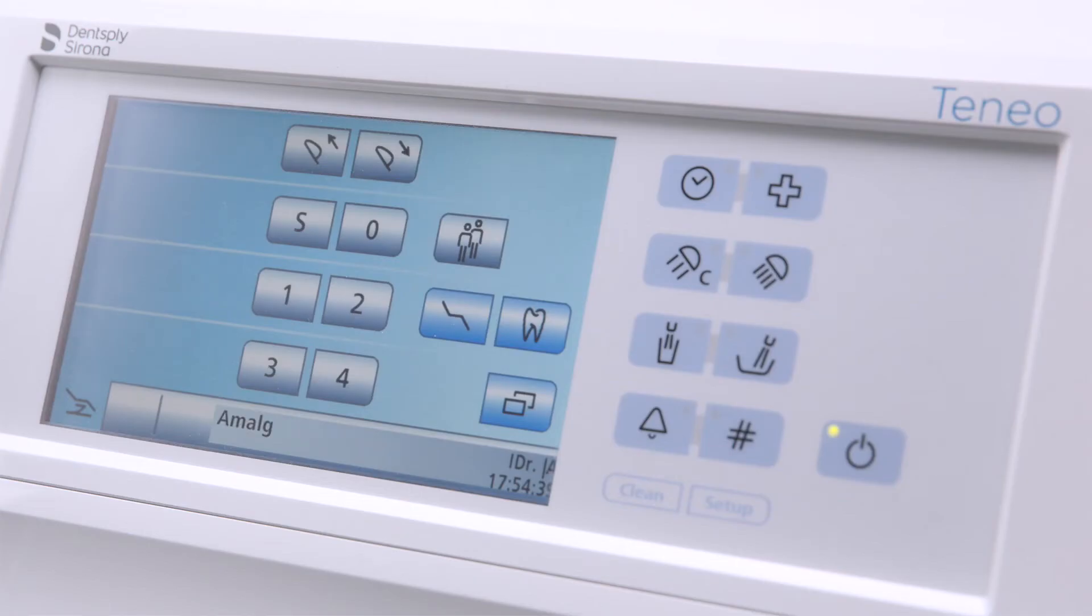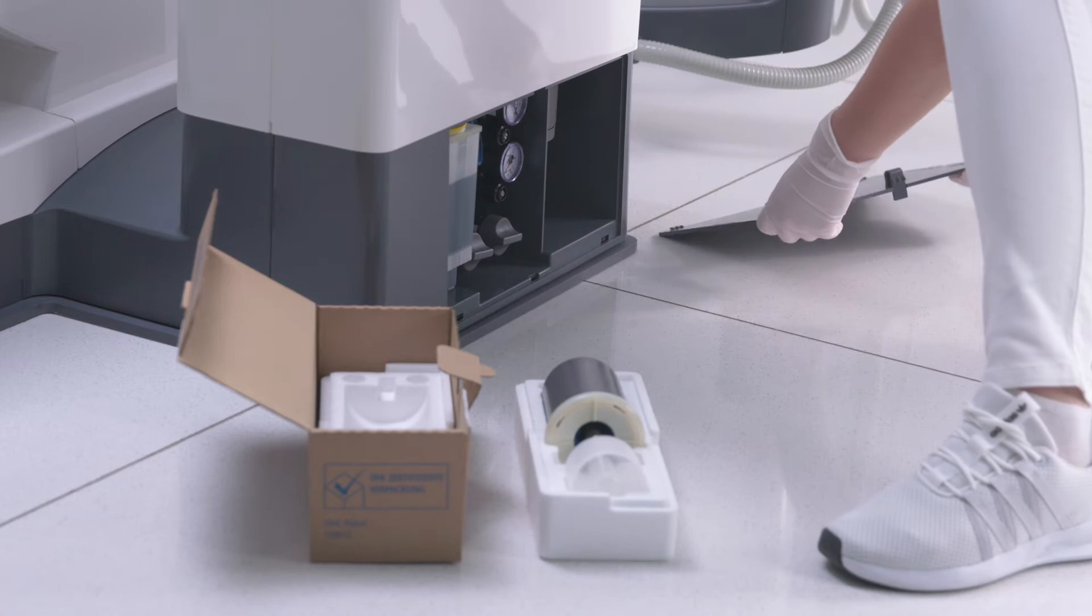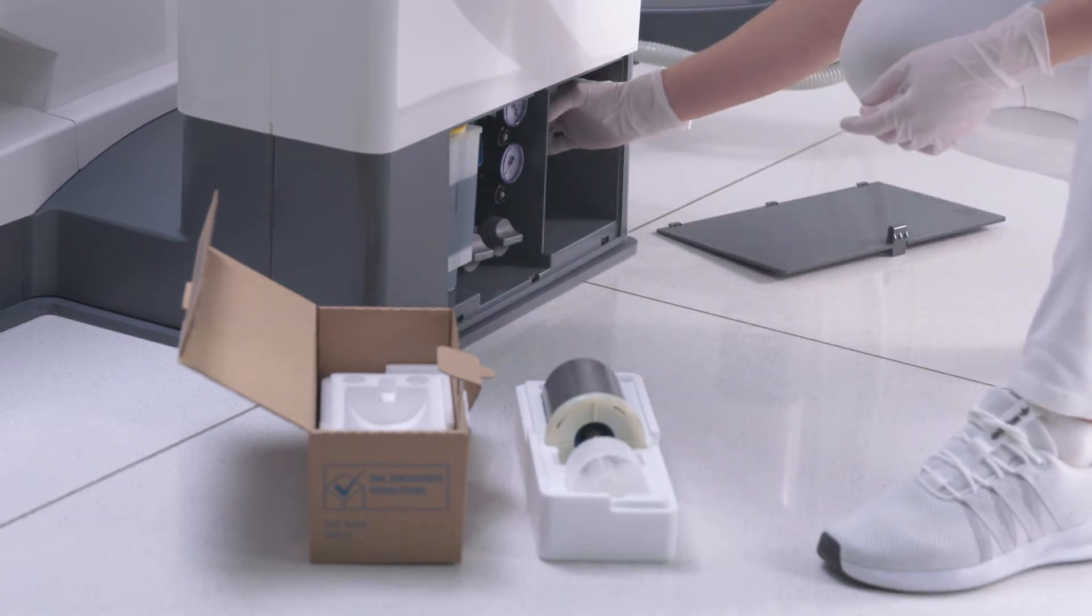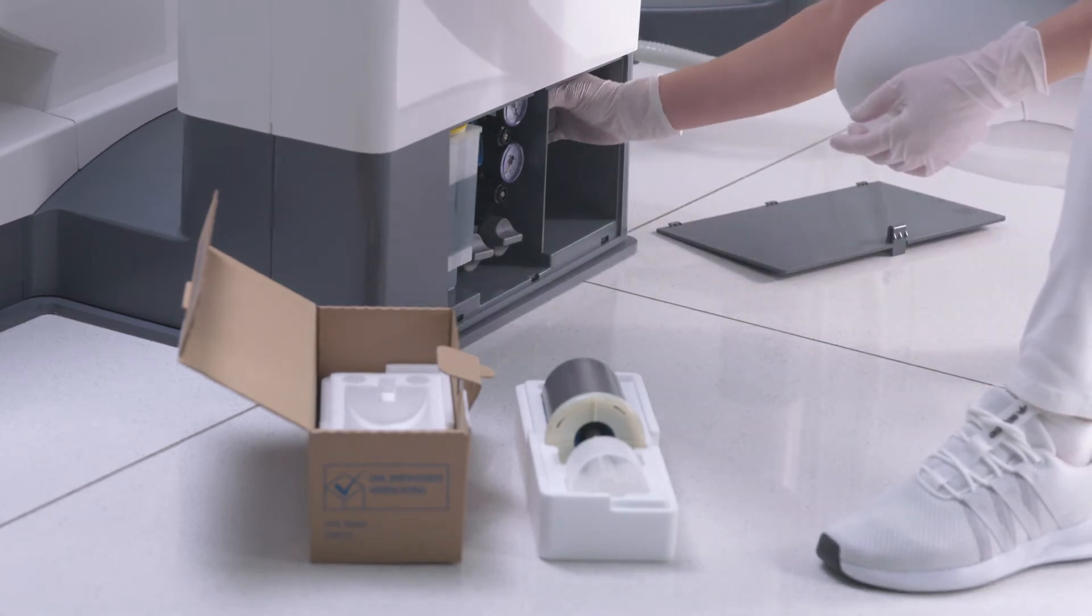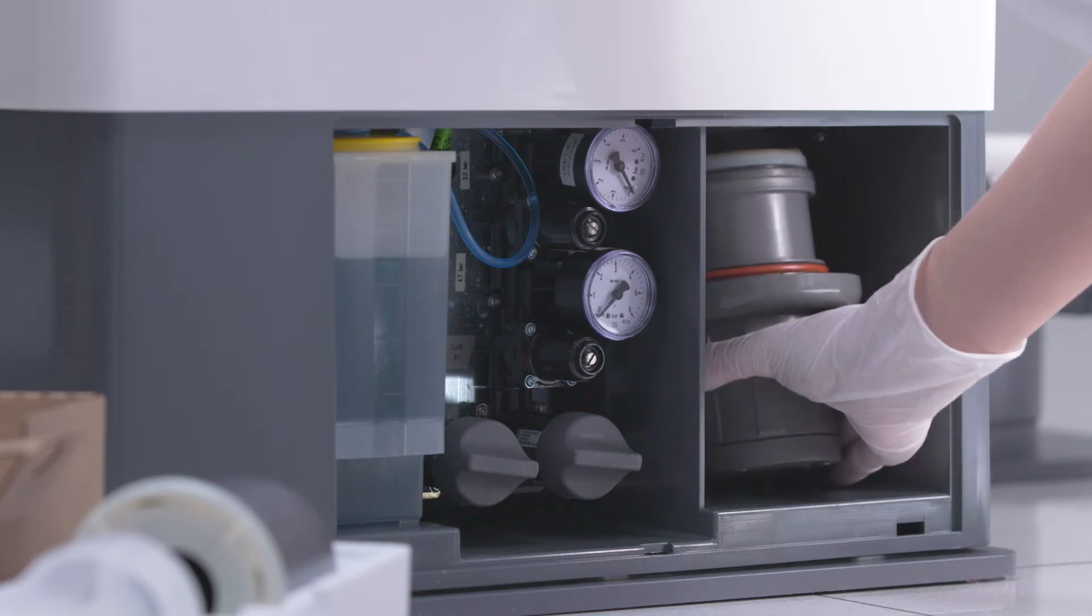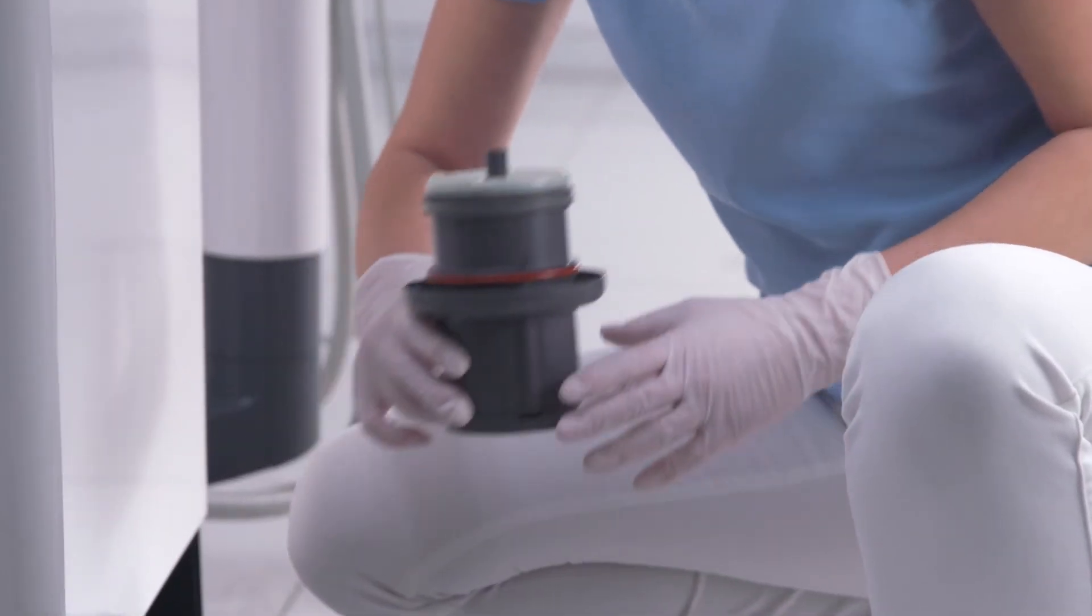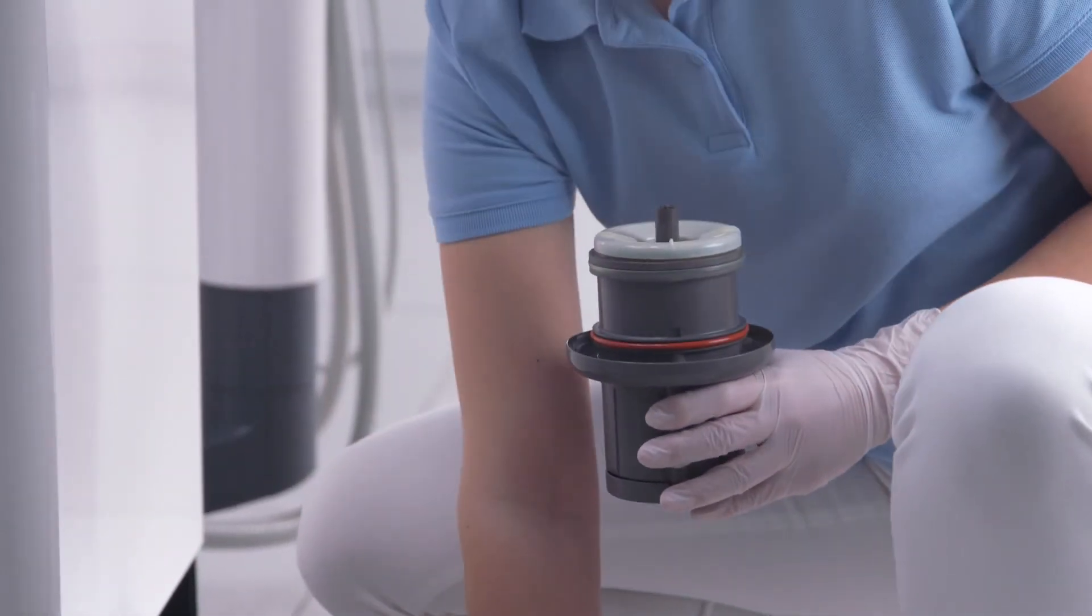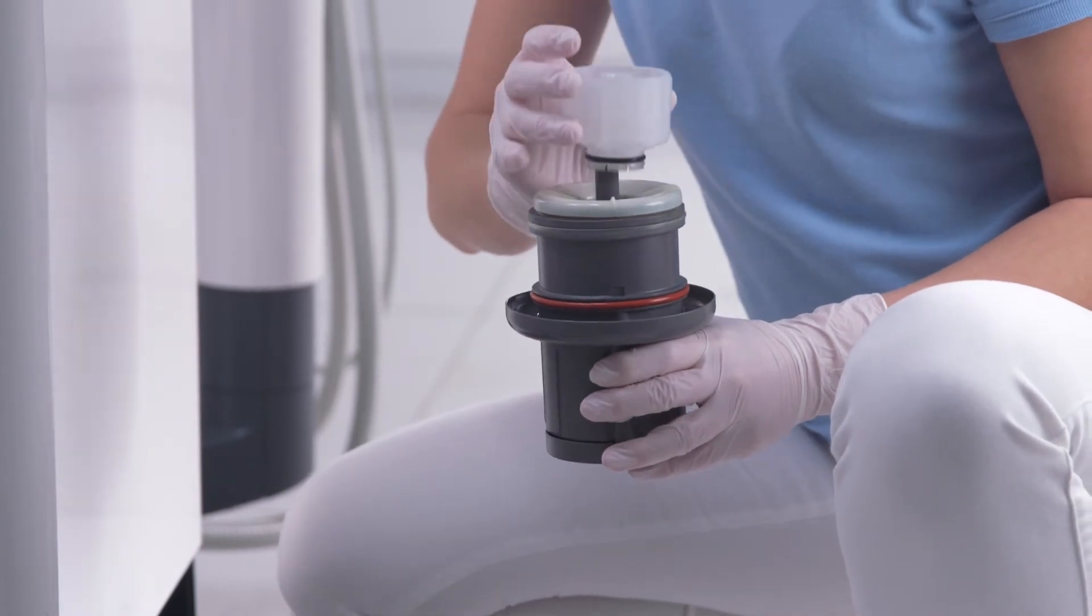If the amalg display appears in the status line of the EasyTouch, change the amalgam rotor. Open the flap on the base of the water unit. Loosen the bayonet catch by turning the lower part of the amalgam separator counter-clockwise. Remove the lower part of the amalgam separator along with the amalgam rotor located inside it. Hold the lower part of the amalgam separator upright.